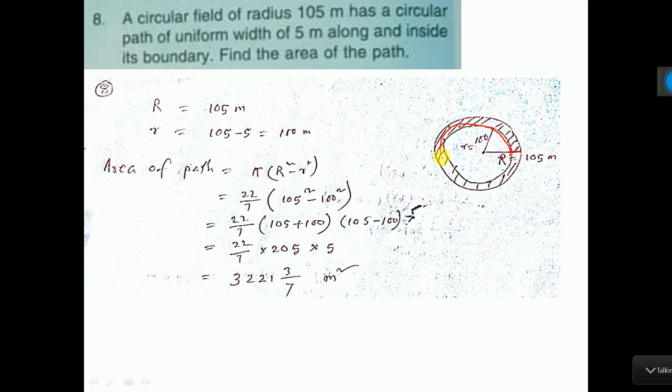The inner radius will be 105 minus 5, that is 100 radius. See here I have calculated that inner radius.